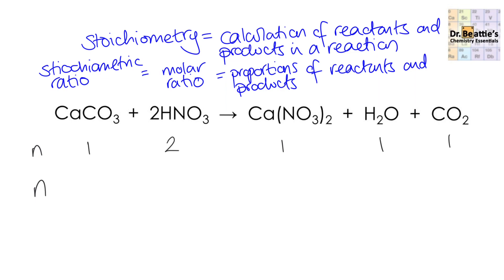We can use these molar ratios to work out proportions of things we don't know if we have the balanced equation. For example, if we start with 0.5 moles of nitric acid, we use the coefficient numbers to work out how much calcium carbonate we need. With a ratio of 2 to 1, the operation going from 2 to 1 is to divide by 2. So we do 0.5 divided by 2, giving 0.25 moles of calcium carbonate for a complete reaction.